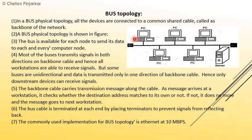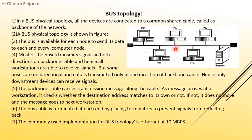Most buses transmit the signal in both directions on the backbone cable, so all workstations are able to receive the signal. However, some buses are unidirectional and data is transmitted in only one direction; hence only downstream devices can receive the signal. Each workstation checks whether the destination address matches its own; if not, the message passes to the next workstation.